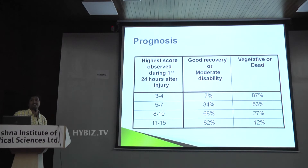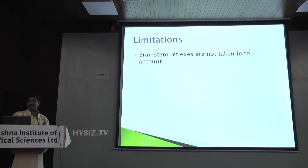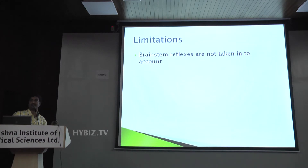But is this Glasgow Coma Scale infallible? In spite of so many efforts, there are fallacies in the Glasgow Coma Scale. As mentioned, pupillary response is a very important monitoring tool in neurology and neurosurgery, but the Glasgow Coma Scale doesn't incorporate pupillary assessment. It does not incorporate brainstem reflexes, so you have to monitor those separately apart from this.